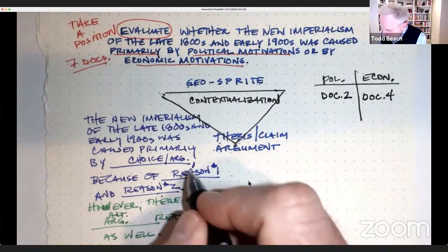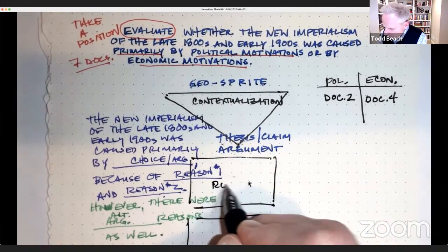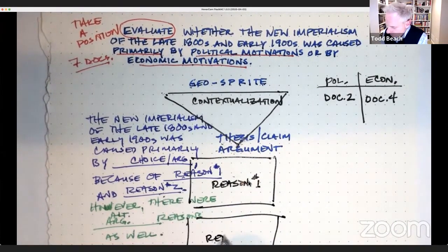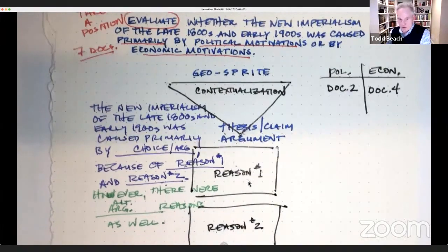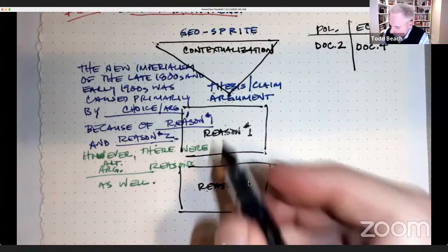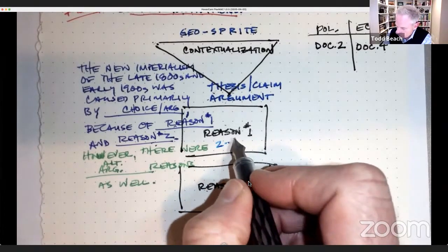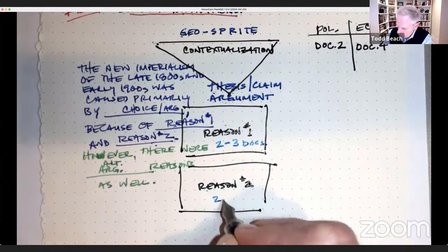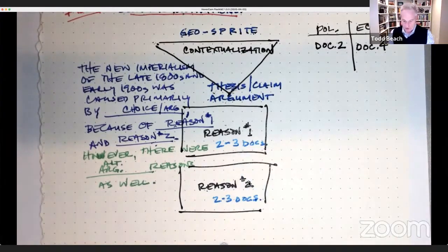So we've got our body paragraphs. This is going to be reason number one that you've identified in this thesis. This is going to be reason number two that you've identified in your thesis. And then with these reasons, you're going to want to use the documents to support your reasoning. We need to use six documents to get all of the document usage and get that point. So use two to three documents here as evidence to support the reason that you're identifying.